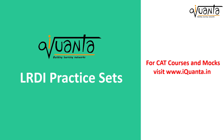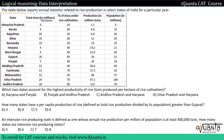Hello everyone. In this video we are going to solve a DEI set. It is again a PASCAT question. The question is: the table below reports annual statistics related to rice production in select states of India for a particular year.